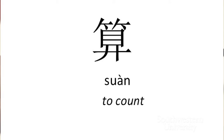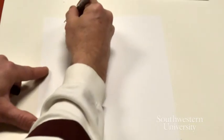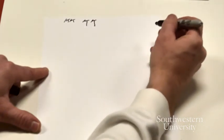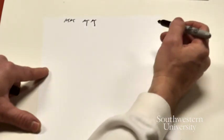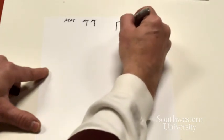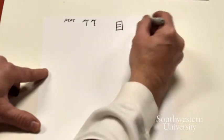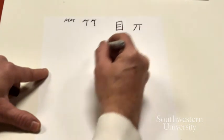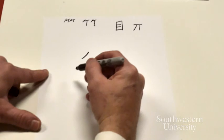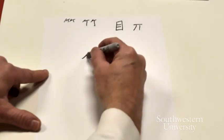So, suan, has the bamboo radical, jiu, there's our jiu, bamboo. And what I think you have beneath this is a depiction of an abacus, there you go, on a stand, to count. And the abacus would be made of wood, like bamboo.